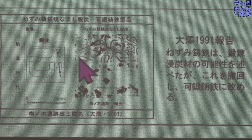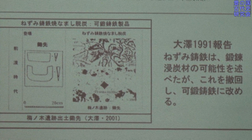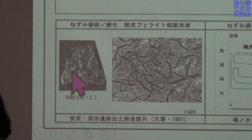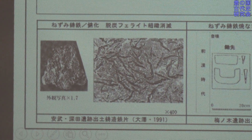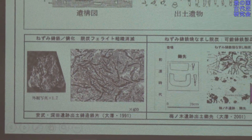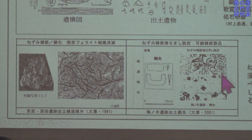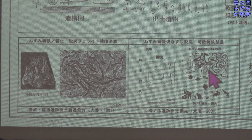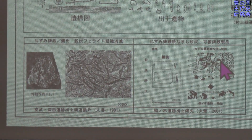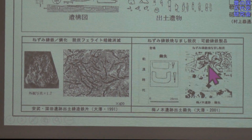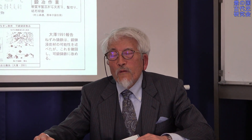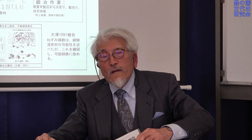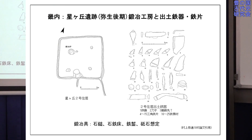熊本県の梅抜き遺跡からも同じようなネズミ鋳鉄の痕跡の黒鉛が出ておりますし、焼きなましの痕跡も確認できました。梅抜き遺跡の遺物と安武・深田遺跡のものが親戚関係にあるような組織であります。我々もいつも良い資料だけに遭遇するわけではなくて、こういった錆びたものからも発言しなければいけないところで、時々間違いがありました。